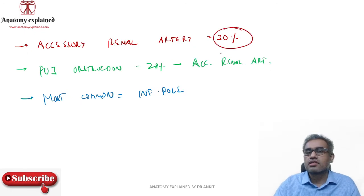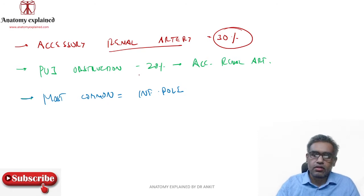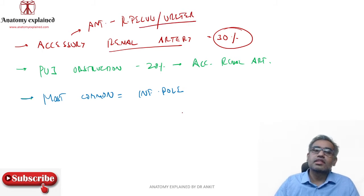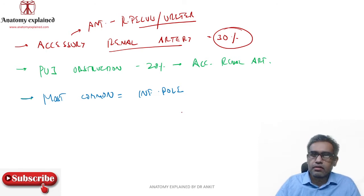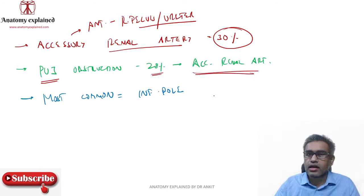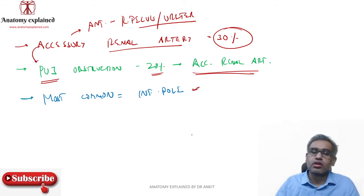This accessory renal artery lies anterior to the renal pelvis or ureter. The pelvi-ureteric junction is near the inferior pole of the kidney. In around 28% of cases of PUJ obstruction in children, those children had an accessory renal artery at the lower part. So the accessory renal artery has an important clinical significance for PUJ obstruction, and it is most commonly on the inferior side.